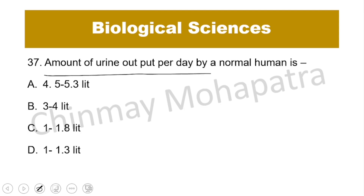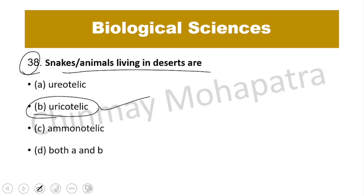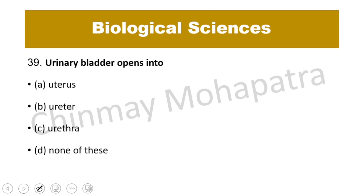Question number 37: The amount of urine output per day by a normal human is 1 to 1.8 liters. Question number 38: Snakes and animals living in deserts are uricotelic because uric acid requires the least amount of water loss, which is essential for desert survival.